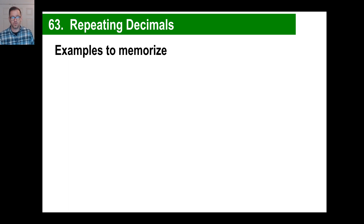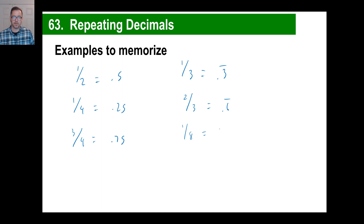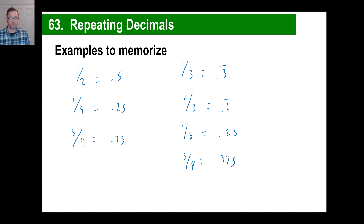A couple of examples of repeating decimals you should know: a half is 0.5, a fourth is 0.25, three fourths is 0.75. Know your thirds: one third is 0.333 repeating, two thirds is 0.666 repeating. Some students know their eighths — one eighth is 0.125, two eighths is just a half, three eighths is 0.375. If you know at least these, you'd be in pretty good shape.